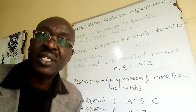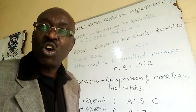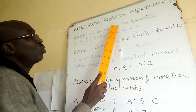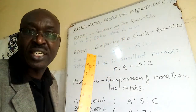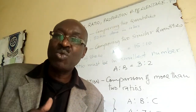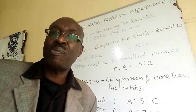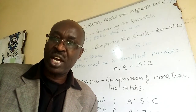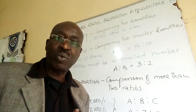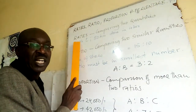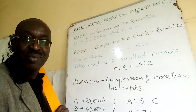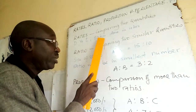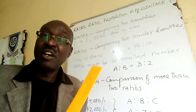One: rates. When we talk of rates, rates is the comparison of two quantities. So there will be two quantities — one in relation to the other. For example, I can compare distance and time: that I covered 80 kilometers in four hours.